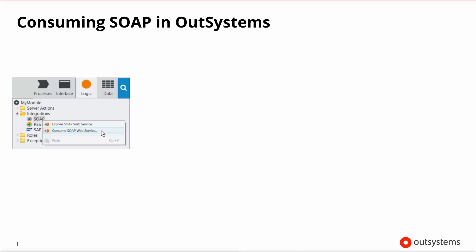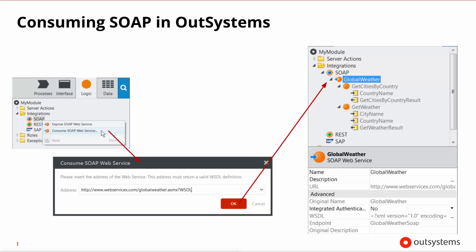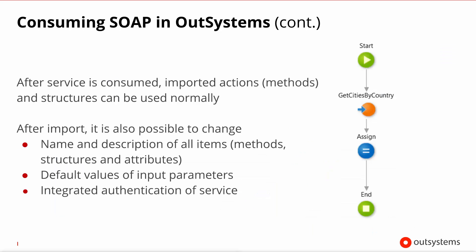Consuming SOAP web services is very simple. Just go into the logic tab and in the SOAP node, select 'Consume SOAP Web Service.' You then need to specify the URL that points to the contract file, and when you press OK, Service Studio will automatically create for you all of the methods and supporting structures it finds in the contract file. Once these elements are present in your module, they can be used normally as if they were actions or structures of your module.